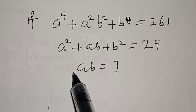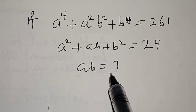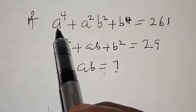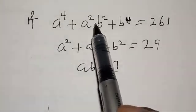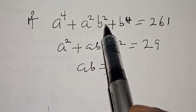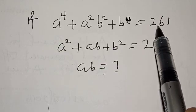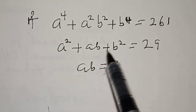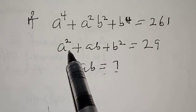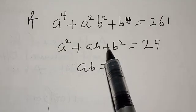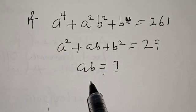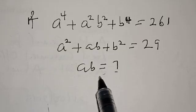Hi everyone, welcome to my class. In this class, we want to look at how we can find the value of ab from this given equation: a raised to power 4 plus a squared b squared plus b raised to power 4 equals 261, and a squared plus ab plus b squared equals 29. So we want to find the value of ab.